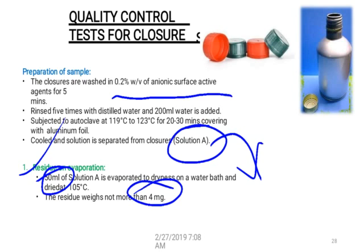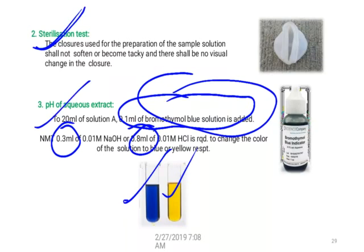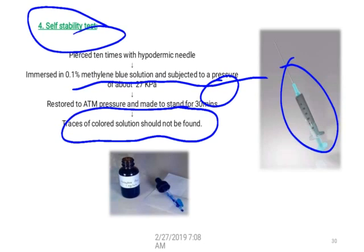In summary, the closure is the part of a container system that packs the container so no external material can enter. We prepare a sample solution using a standardized washing and autoclave method, and this solution is used for all four closure tests: residue on evaporation, sterilization test, pH of aqueous extract, and self-sealing test. Today we covered quality control tests for glass containers, plastic containers, and closures. The remaining topics will be covered in the next lecture.